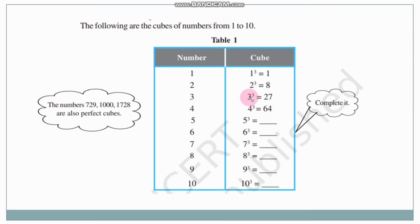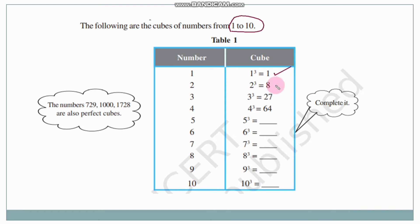Here is a table showing cubes from 1 to 10. 1 cube is 1. 2 cube is 2 into 2 into 2 which is 8. 3 cube is 3 into 3 into 3, three threes are nine, nine times three is 27. 4 cube is 4 into 4 into 4 — four fours are 16, sixteen fours are 64. 5 cube is 5 into 5 into 5 — twenty-five fives gives 125.